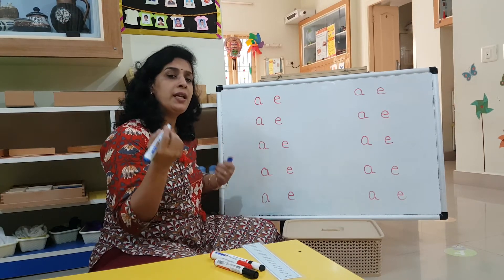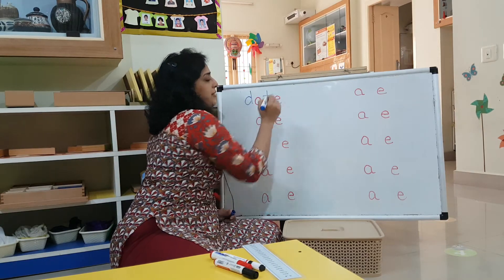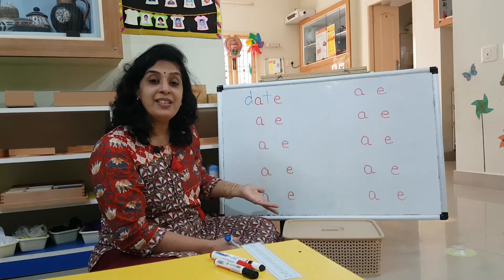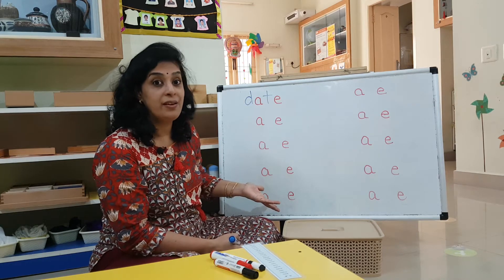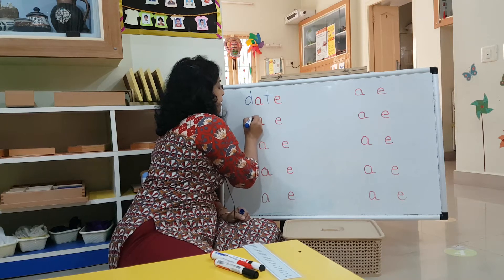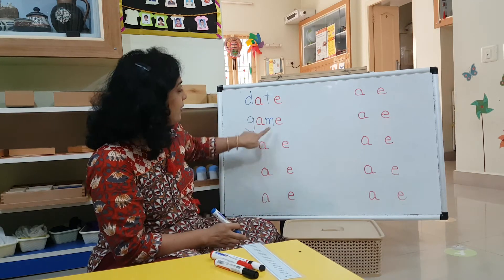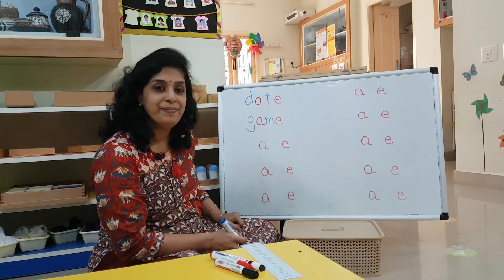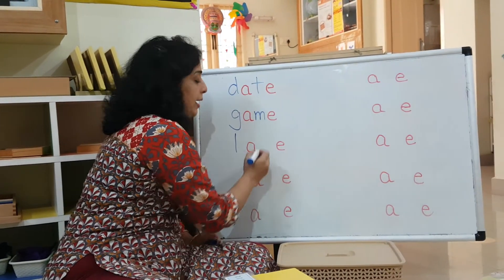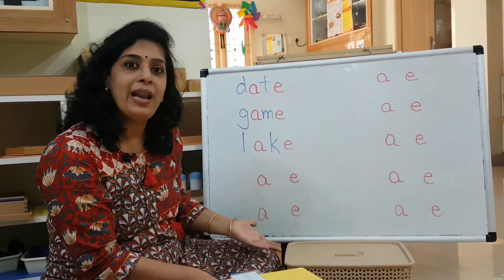You will notice you have been reading all these words already. First word: D-A-T-E — 'date'. What is the date today? Yes, it is the 31st. Great. Next one: G-A-M-E — 'game'. Which game do you like to play? Next: L-A-K-E — 'lake'. You all know the landform lake, right? The lake and the pond.